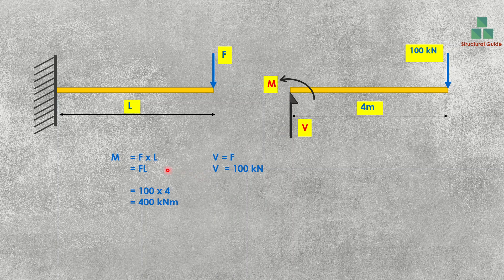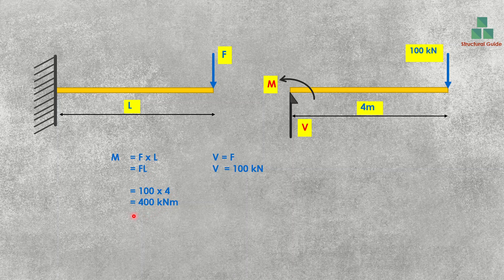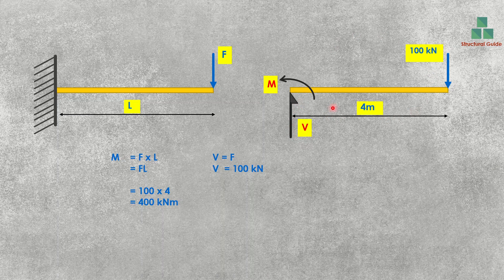Now let's see how to calculate the bending moment. Bending moment equals force into distance. We have F = 100 kN and L = 4 m, so the bending moment is 400 kNm. For the shear force, we consider the equilibrium of the section. We have 100 kN from the top and the support reaction from the bottom. So 100 equals V, meaning V equals F. Therefore the shear force will be 100 kN, and the support reaction is also 100 kN.